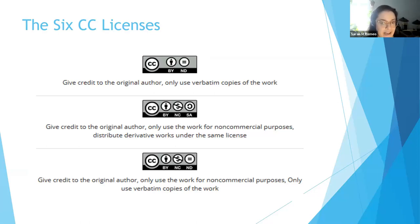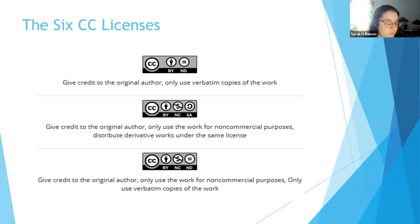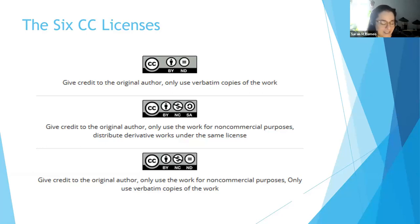The CC BY NC SA — attribution, non-commercial, share-alike license — must be used for non-commercial purposes, you must attribute it to the author, and you must share any adaptations with this same license. Finally, the most restrictive license: attribution, non-commercial, no derivatives. No adaptations can be made, it can be used for non-commercial purposes only, and you have to give credit to the creator.